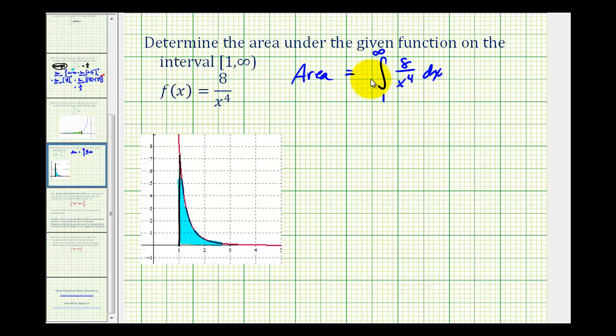so we'll change the notation to the limit as b approaches infinity of one to b. So we replace infinity with b, and then we'll determine the limit as b approaches infinity of the definite integral. So we're going to go ahead and rewrite this as eight x to the negative fourth dx, so we can find the antiderivative.